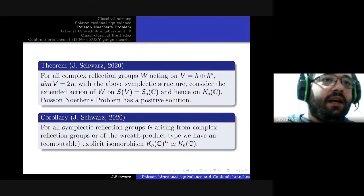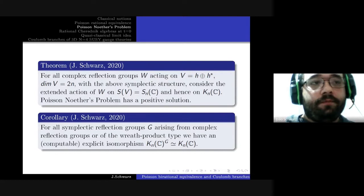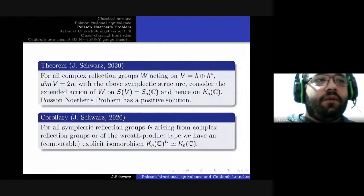Our first main result is the following: let W be a complex reflection group acting on V in the way outlined, so it becomes a symplectic reflection group. We can consider its action on the standard Poisson algebra and hence on the standard Poisson field. Poisson Noether's problem has a positive solution for this action.